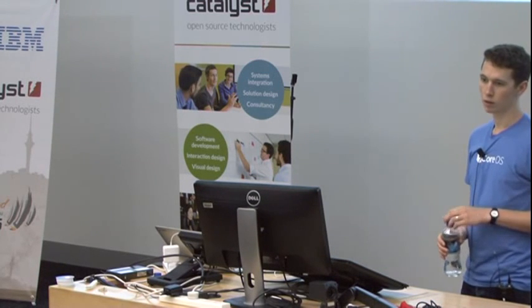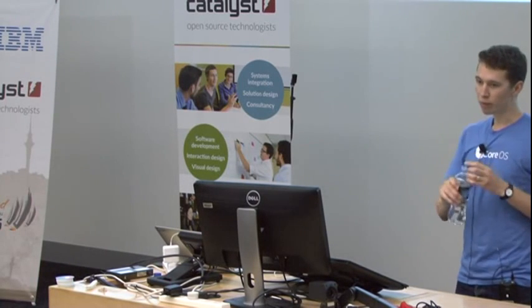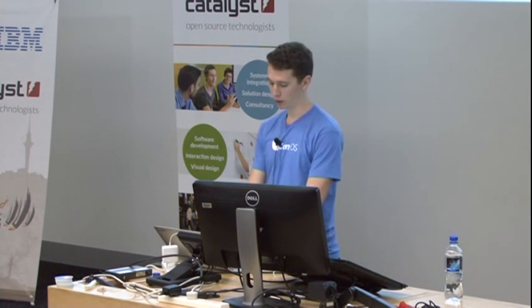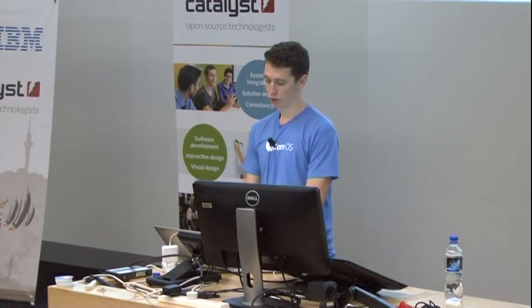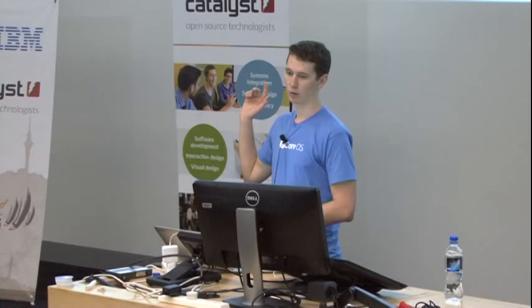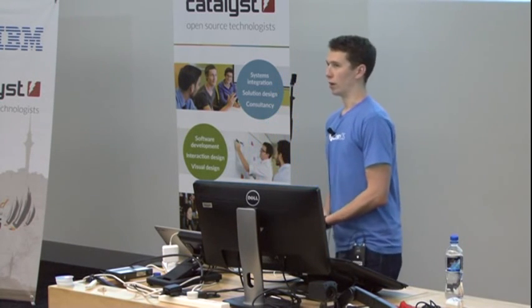In the example just run, the fleet journal service started on all hosts because global=true. You could say some number instead and it would start on that many. The pattern we use if you want to start, say, five of something, is a templated unit — the name of the unit, then at-sign, then some identifier. We'll talk about how Kubernetes does replication differently — Kubernetes has a slightly different way of doing replication of a single service. Hopefully if logentries.com is working, we should be able to see some log data streaming in.